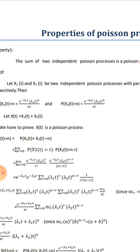And P(X2(t) = n) is equal to e raised to minus λ2t, times (λ2t)^n divided by n factorial.